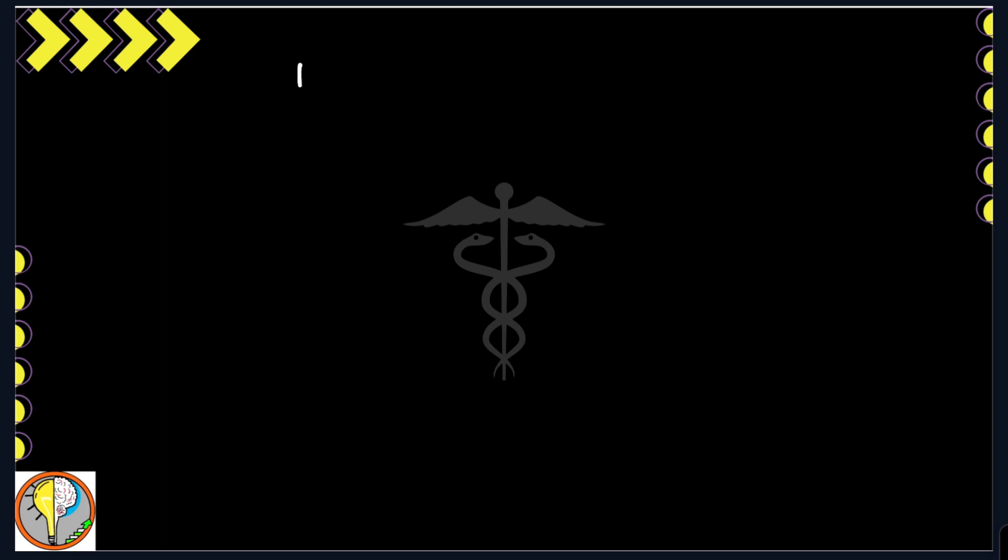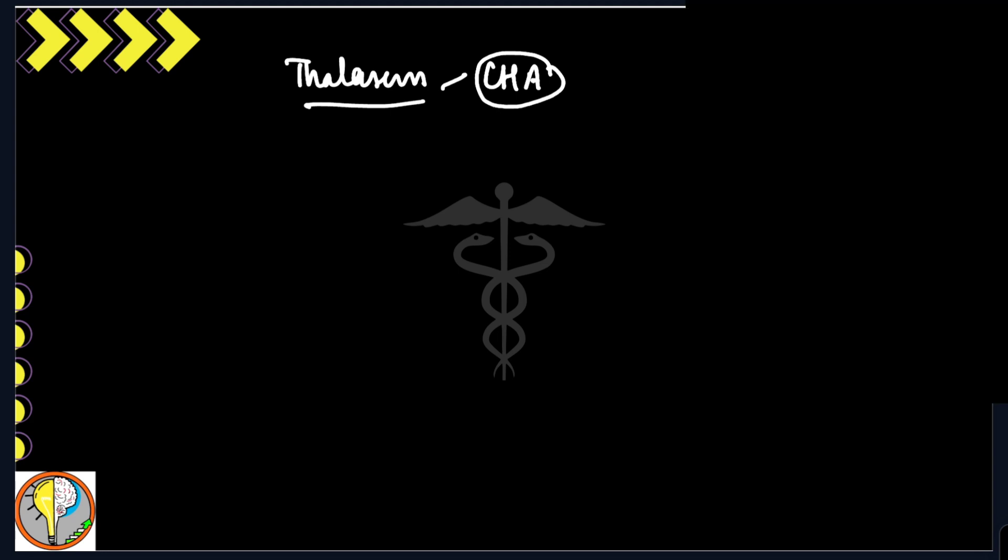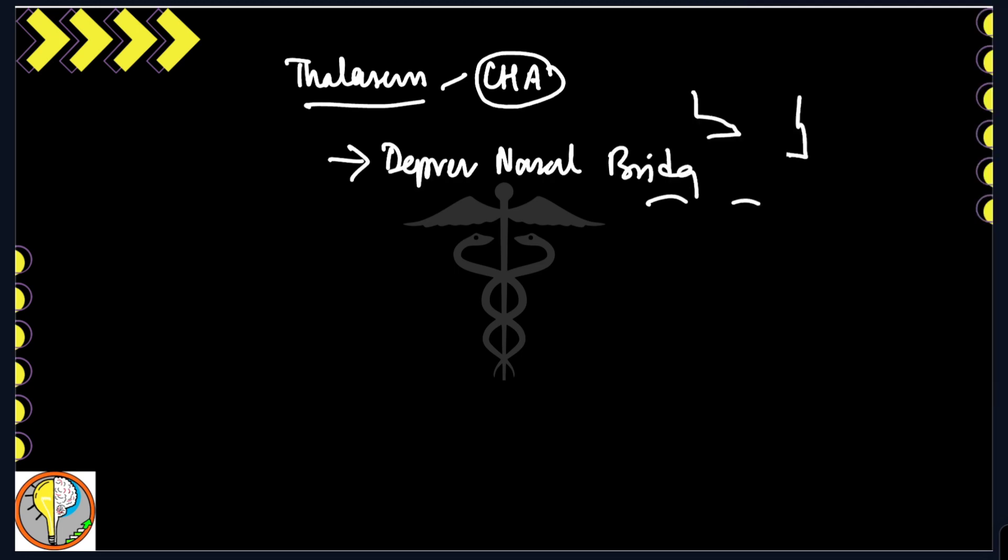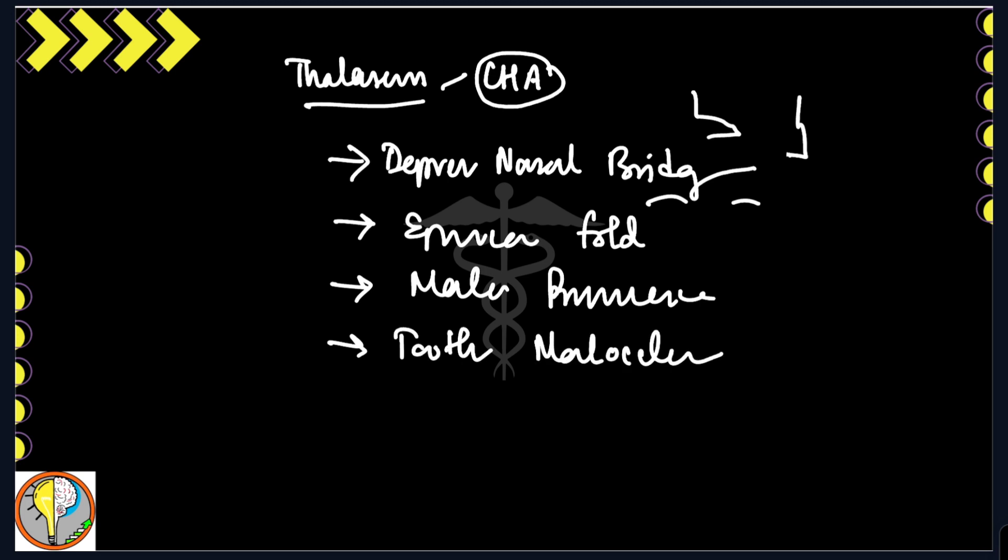Suppose a thalassemic patient. This is known as chronic hemolytic anemia. In this, you can have depressed nasal bridge, epicanthic fold, malar prominence, and tooth malocclusion. This is found in a case of thalassemic facies.